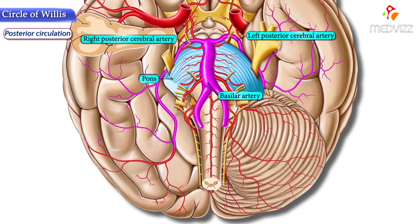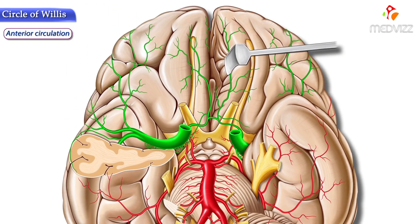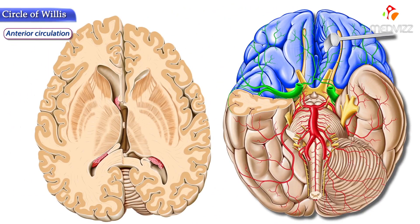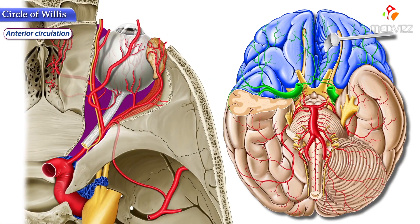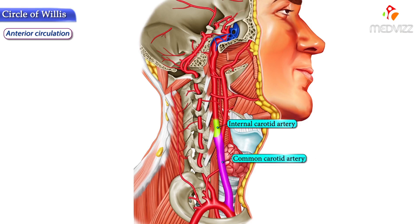Now coming to the anterior circulation. The anterior aspect of the circle provides the anterior circulation of the brain and mainly supplies the major portions of the cerebral hemispheres and deeper structures like the caudate and putamen, also known as the striatum, as well as nearby structures of the cerebrum like the orbit. The internal carotid arteries originate from the common carotid arteries at the level of the fourth cervical vertebra.